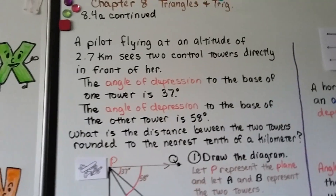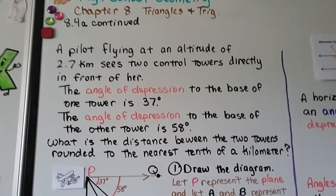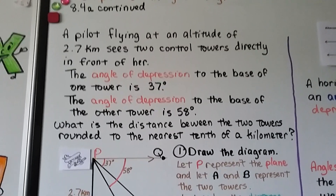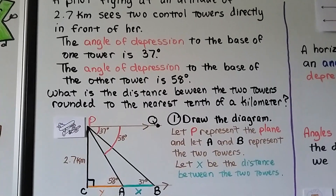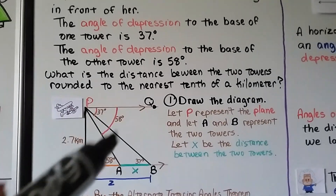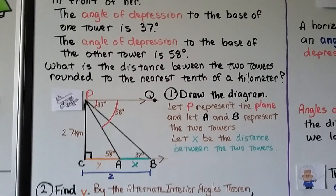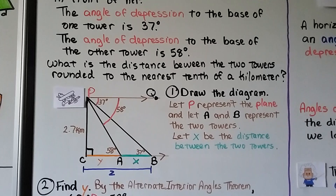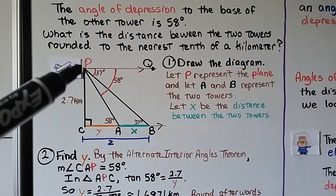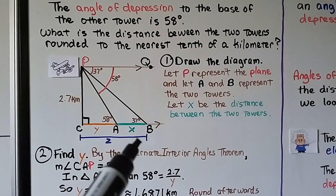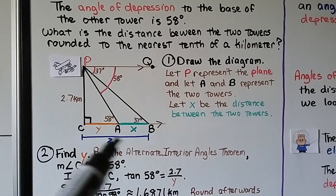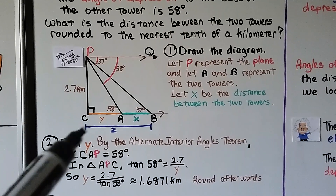Here's another problem. A pilot flying at an altitude of 2.7 kilometers sees two control towers directly in front of her. The angle of depression to the base of one tower is 37 degrees, and the angle of depression to the base of the other tower is 58 degrees. What is the distance between the two towers rounded to the nearest tenth of a kilometer? We let P represent the plane, A and B represent the two towers, X the distance between them, Y the nearer distance, and Z the full distance.